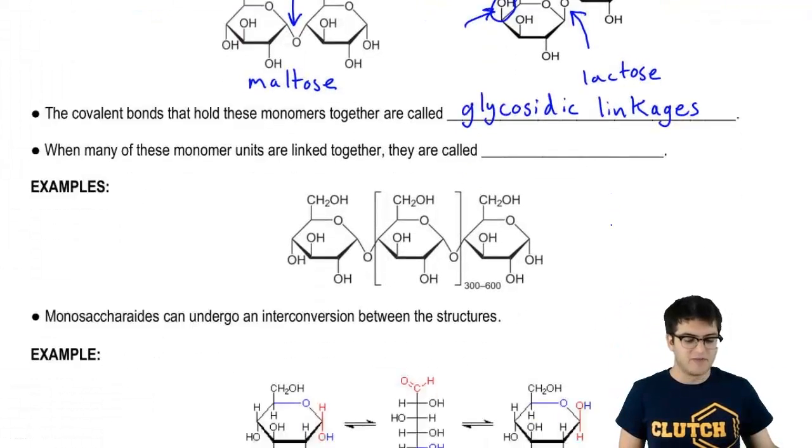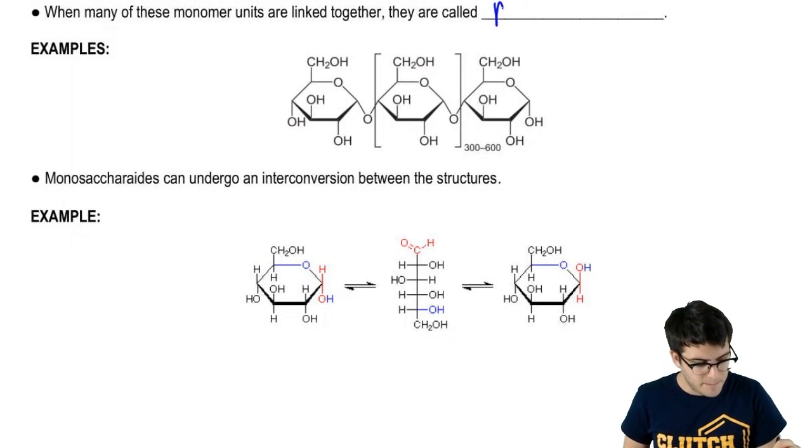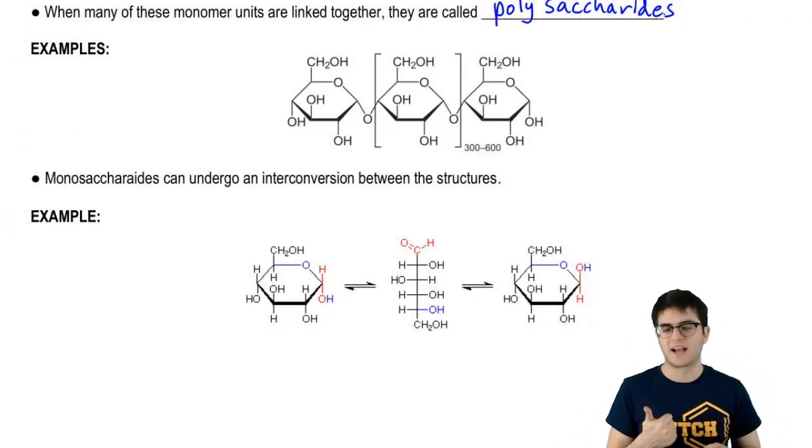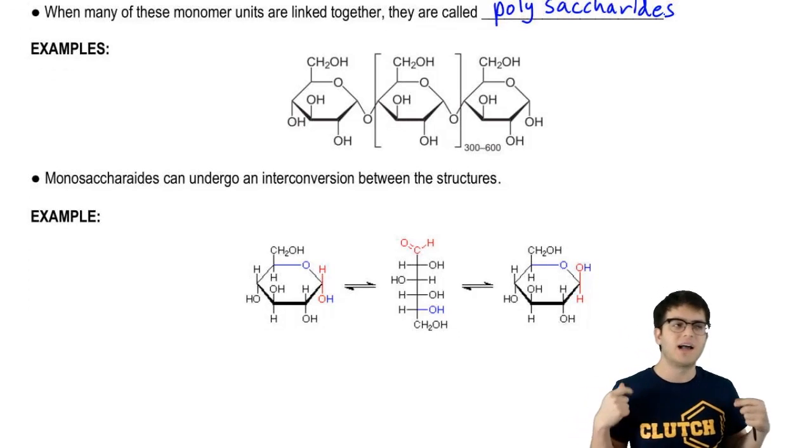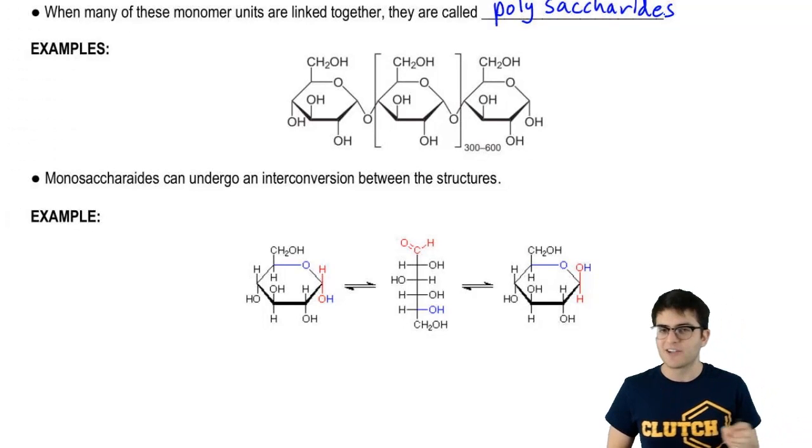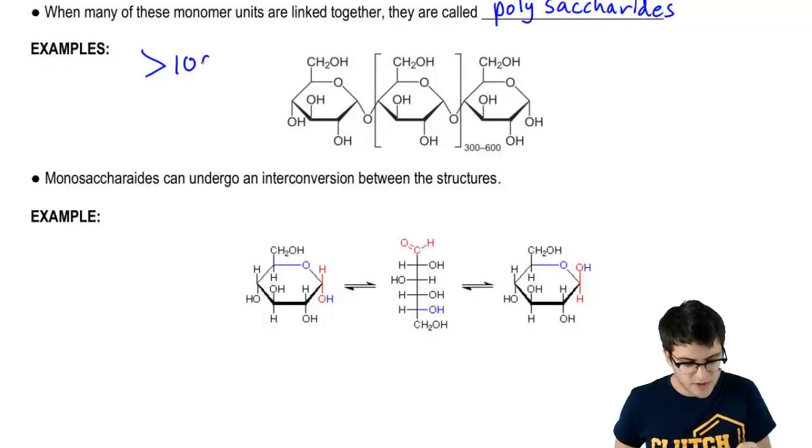When you get a lot of these monomers together, they form what are called polysaccharides. So monosaccharide—mono, one. Disaccharide—di, two. Polysaccharide—poly means many. It turns out there's actually a kind of set amount for what's considered a polysaccharide. Polysaccharides are considered to have greater than 100 subunits.